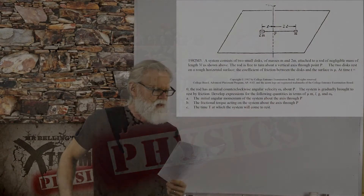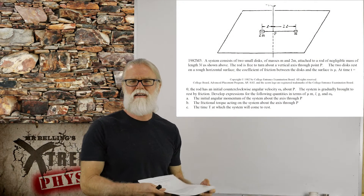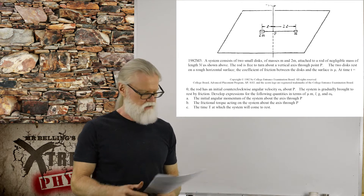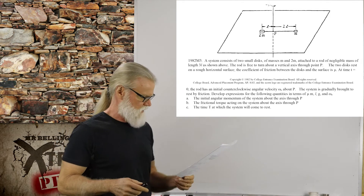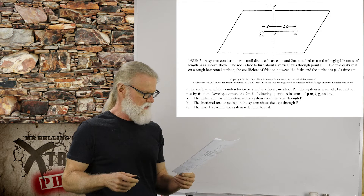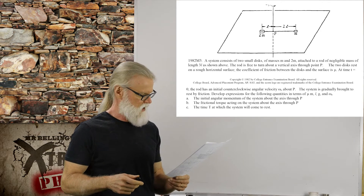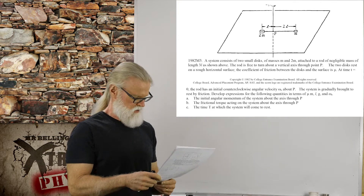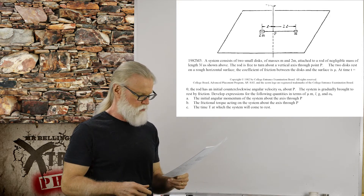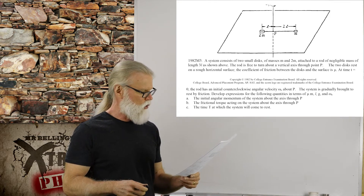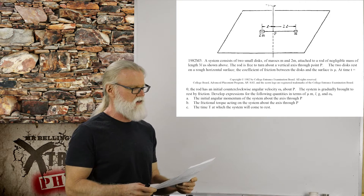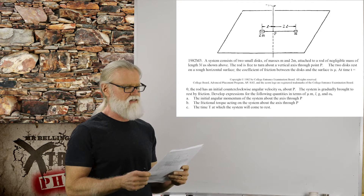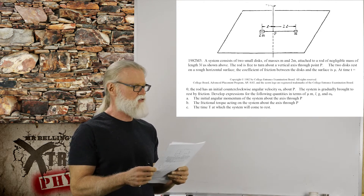This is the 1982 APC Question 3, on rotation. We have a system that consists of two small disks of mass M and 2M attached to a rod of negligible mass of length 3L. The rod is free to turn about a vertical axis through point P. The two disks rest on a rough horizontal surface. The coefficient of friction between the disks and the surface is mu. At time t equals 0, the rod has an initial counterclockwise angular velocity omega zero about point P. The system is gradually brought to rest by friction.